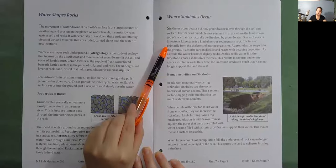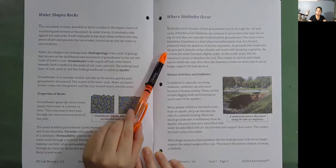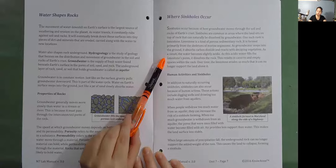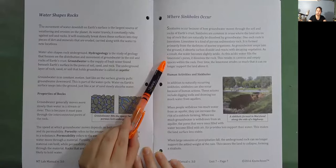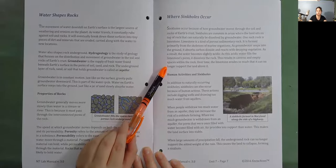As groundwater seeps into the ground, it absorbs carbon dioxide and reacts with decaying vegetation. As a result, the water becomes slightly acidic. As this acidic water fills the limestone's pores, it dissolves the rock. This results in caverns and empty spaces within the rock. Over time, the limestone erodes so much that it can no longer support the land above it.